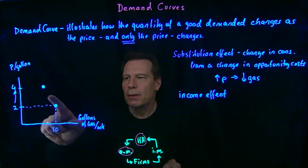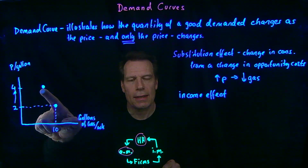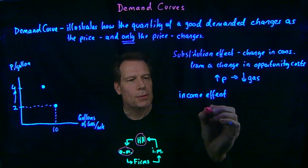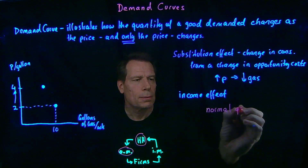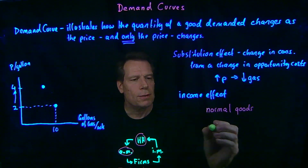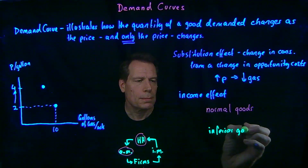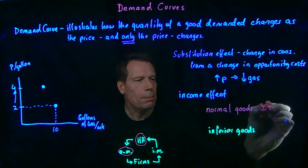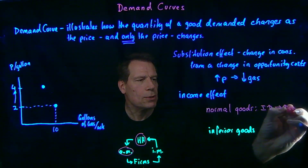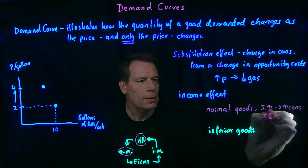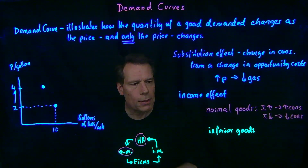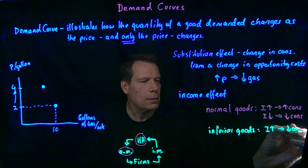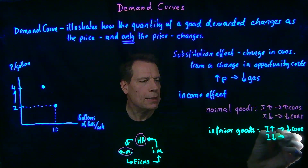So when we take that $20 away from you, are you going to consume more or less gasoline than when you had it? Well, it turns out that depends on what kind of good gasoline is. There are two kinds of goods: normal goods and inferior goods. Normal goods are goods where if income goes up, it leads to an increase in consumption, and when income goes down, it leads to a decrease in consumption. Inferior goods are goods where if your income goes up, it leads to a decrease in consumption, and if your income goes down, it leads to an increase in consumption.